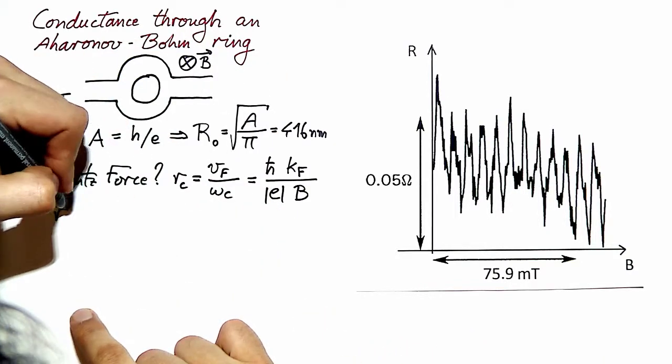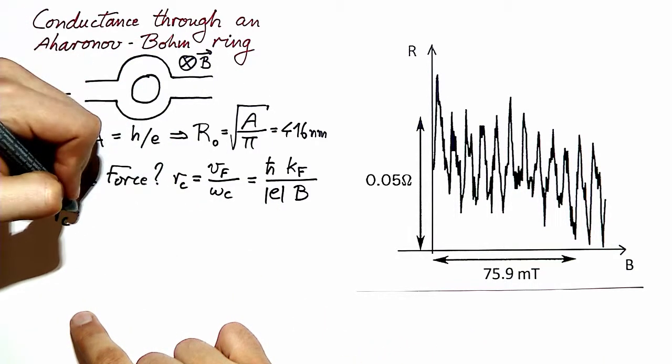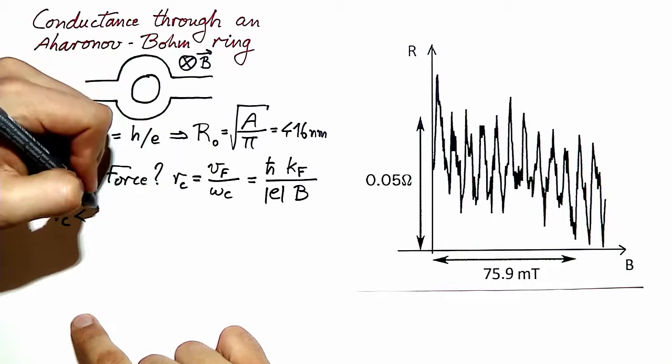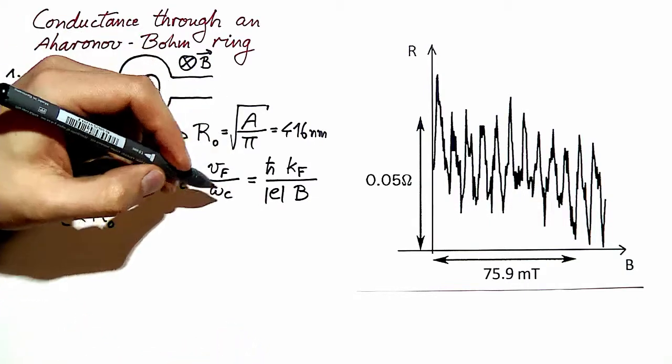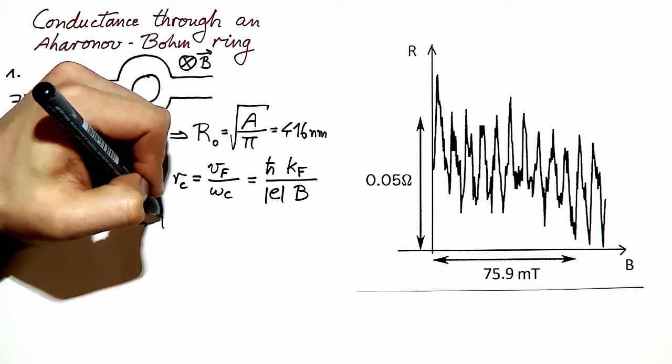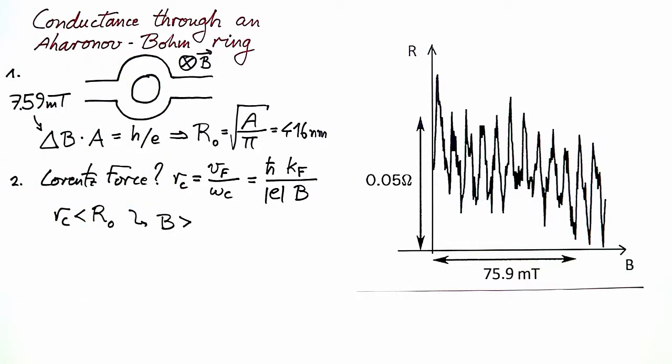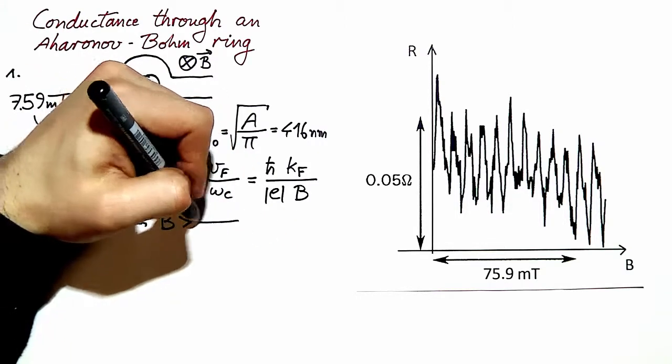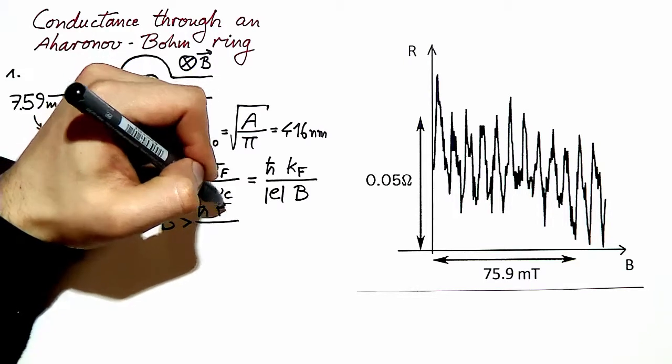This condition of cyclotron radius being smaller than the radius of the ring gives us a condition for B-field, which then has to be larger than an expression which we can evaluate.